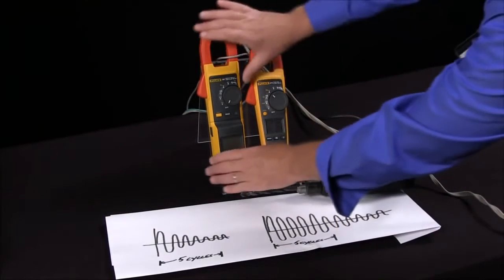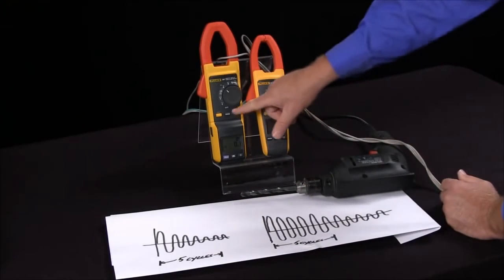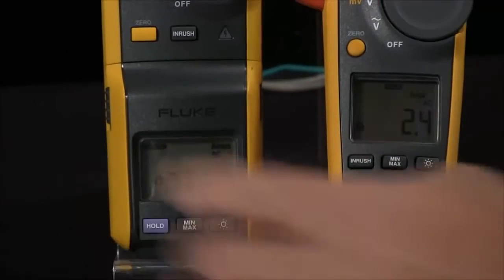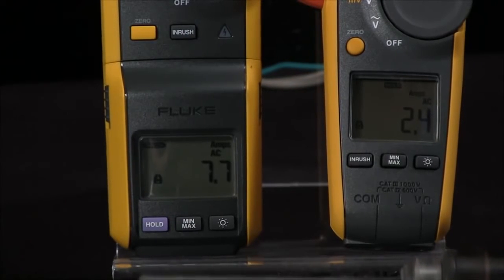Well, to take an inrush current I would turn on my meter to amps and I would need a clamp meter that has the ability to measure inrush. I hit the inrush button and then when my motor starts I can get the inrush current.